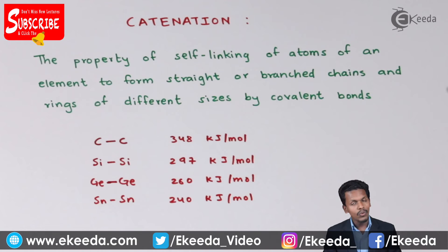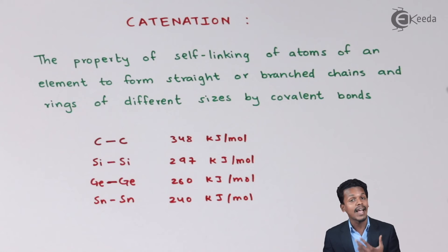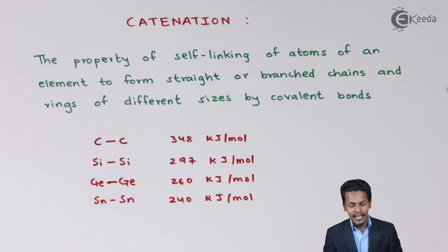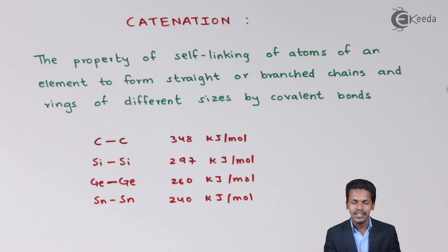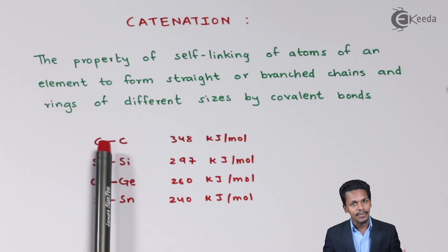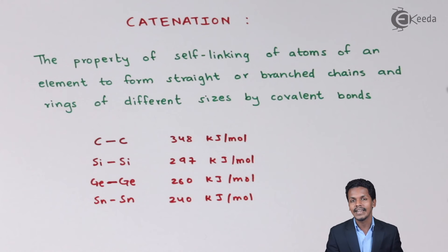If we observe this data, the energy required to break the tin-tin bond is 240 kJ/mol, whereas carbon-carbon requires a much higher 348 kJ/mol. Carbon has a higher bond enthalpy compared to all other group 14 elements, and that is the reason it forms catenation. A higher bond enthalpy means the carbon-carbon bond is stronger and more stable.